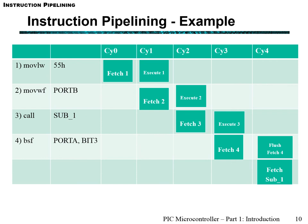Here is an example of pipelining using assembly language, the default native language for the PIC. Say we want to move the value 0x55 hex — cycle zero fetches it and then executes it. Whilst executing, the port B register is being fetched. As you can see, in each cycle we are fetching and executing at the same time.